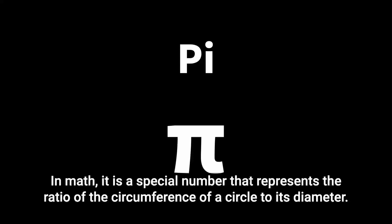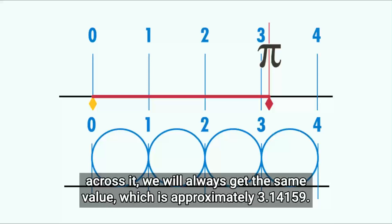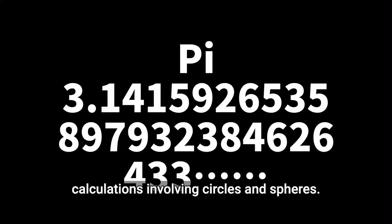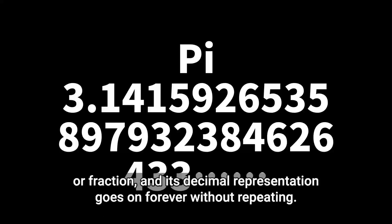In math, pi is a special number that represents the ratio of the circumference of a circle to its diameter. This means that if we divide the distance around the outside of a circle by the distance across it, we will always get the same value, which is approximately 3.14159. This value is known as pi, and it is a constant number used in many formulas and calculations involving circles and spheres. Pi is an irrational number, which means that it cannot be expressed as a finite decimal or fraction, and its decimal representation goes on forever without repeating.